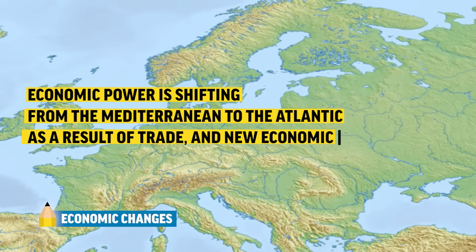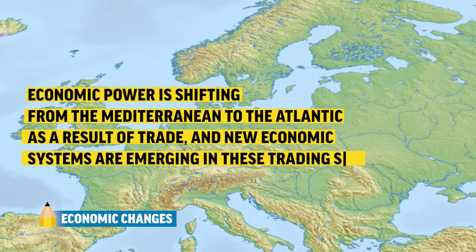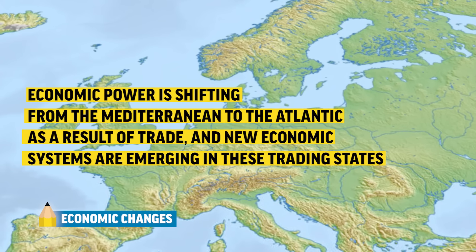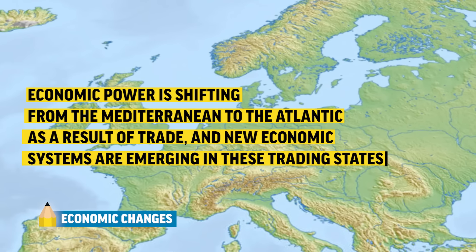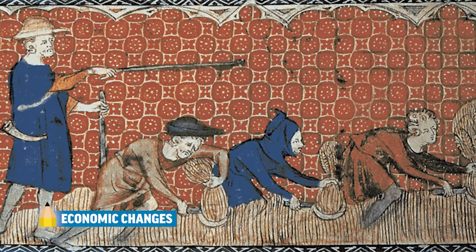Economic power is shifting from the Mediterranean to the Atlantic as a result of trade, and new economic systems are emerging in these trading states, leading to a wealthy middle class of merchants emerging in the west. Meanwhile, in the east, serfdom is codified. This is when we start to see an economic difference emerge between the west and the east in Europe.